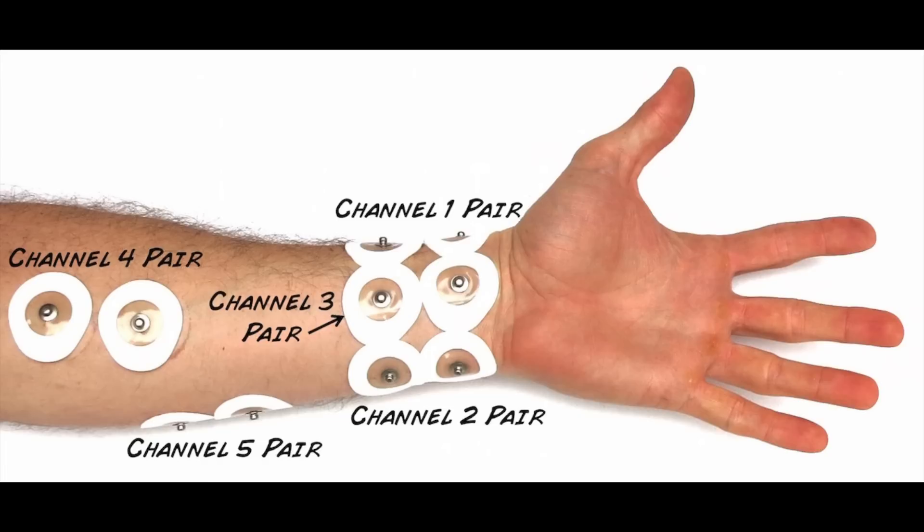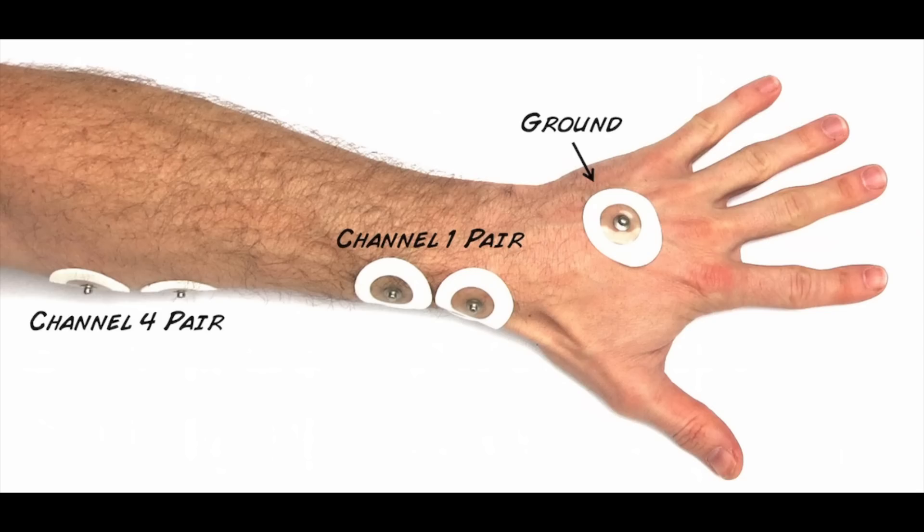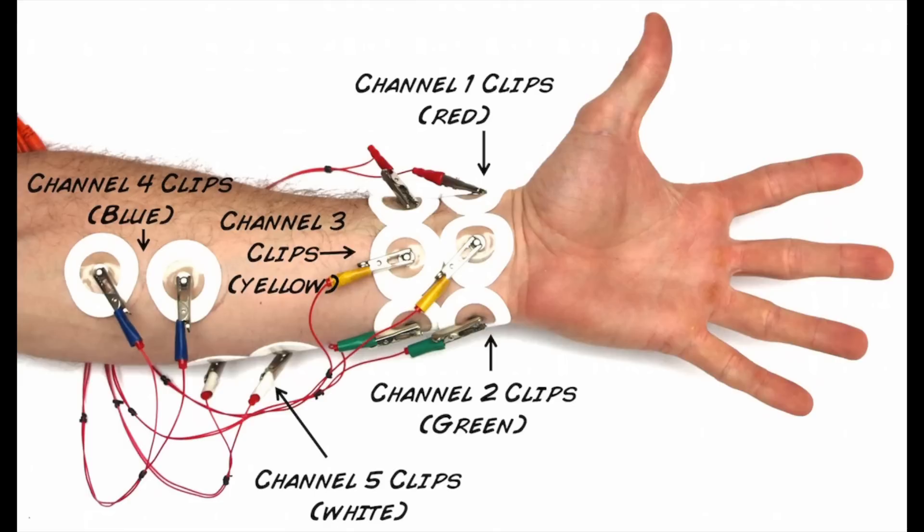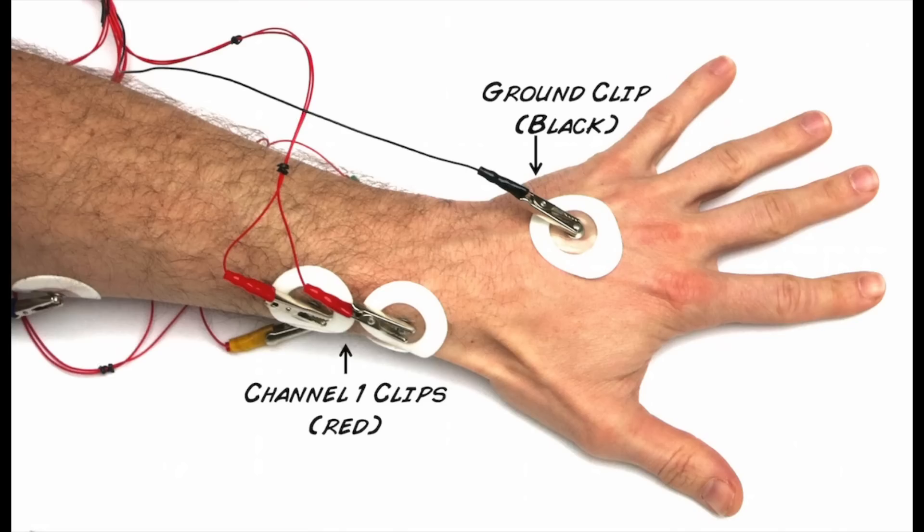To begin, place five pairs of electrodes in these locations along your forearm, and the ground on the back of your hand. Hook the cables up to the electrodes on your forearm, including the ground, and we're ready to go.